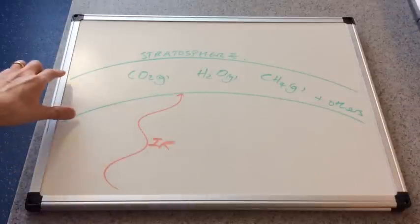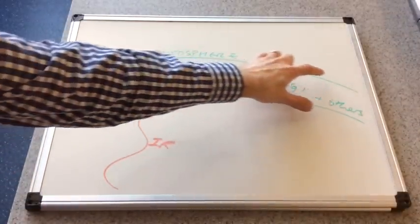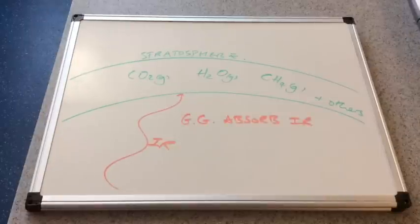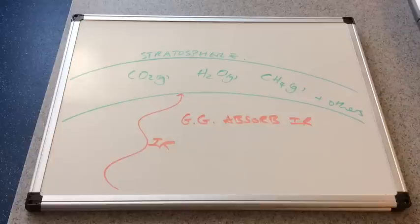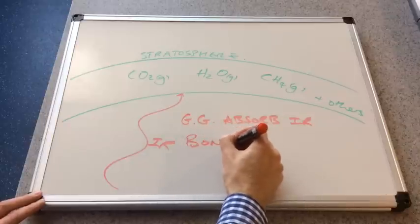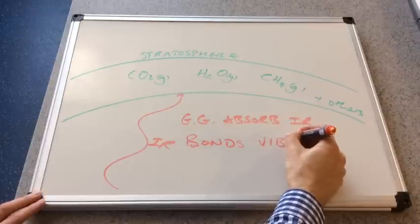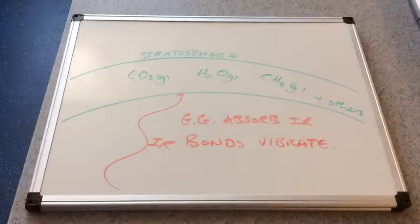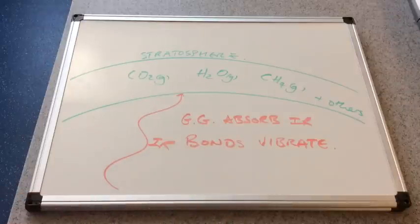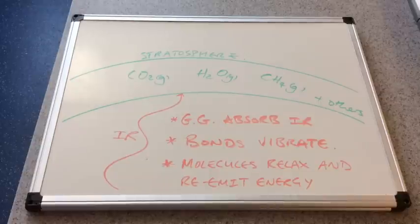So when the infrared reaches this part of the stratosphere where these greenhouse gases are, they will actually absorb the infrared. Now what that does is it raises the energy of the gases and it makes the bonds vibrate. Eventually the molecules will relax back down into a lower energy state and the energy is re-emitted.